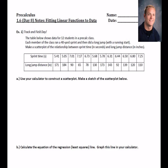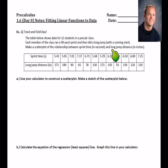Let's go ahead and start with example one. It says the table below shows data for 12 students in a pre-calc class. It's track and field day. Each member of the class ran a 40-yard sprint and did a long jump with a running start. Make a scatterplot of the relationship between sprint time in seconds and long jump distance in inches. A scatterplot means we keep one variable on the x-axis, one on the y-axis, and plot dots for each coordinate point.